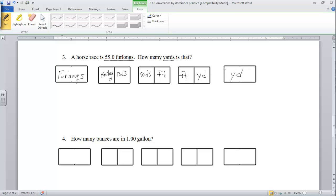From there then, let's put our numbers in. We have 55.0 furlongs and we know there is one furlong for every 40 rods. There's also one rod for every 16.5 feet and there are three feet in one yard.